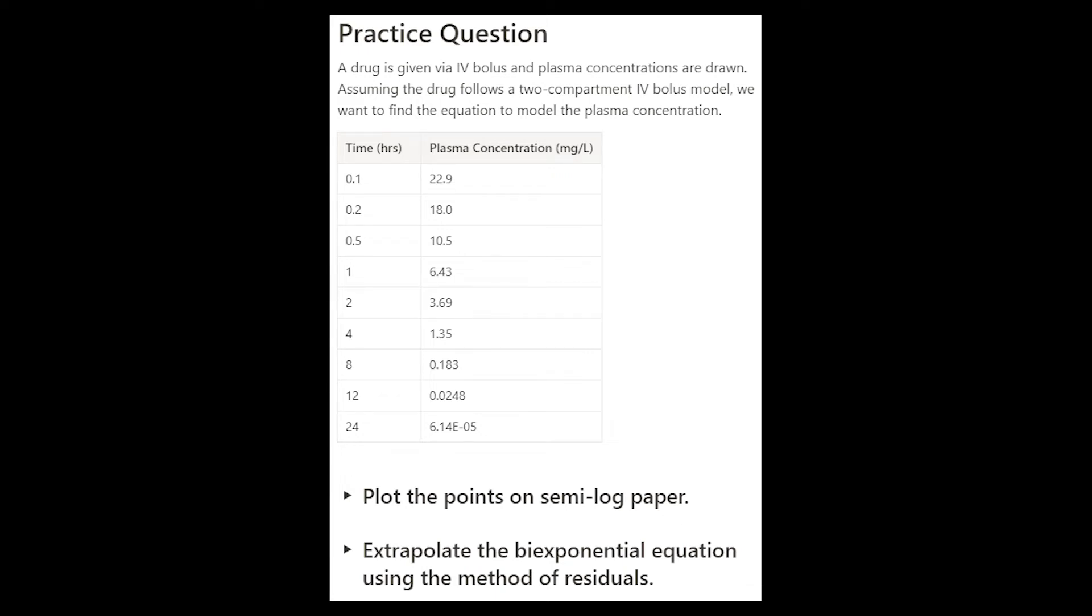In this problem, a drug is given via IV bolus, and plasma concentrations are drawn, given in the table. We are assuming the drug follows a two-compartment IV bolus model, and we want to find the equation to model the plasma concentration.